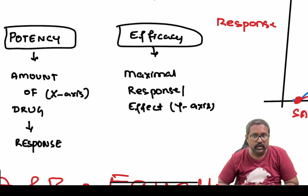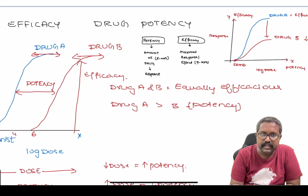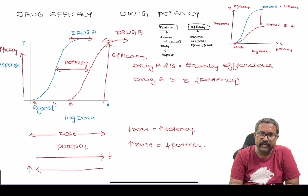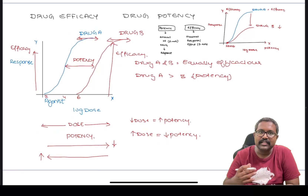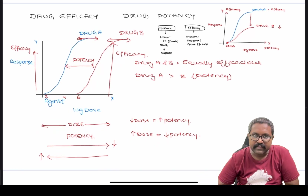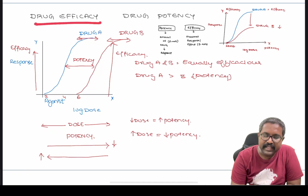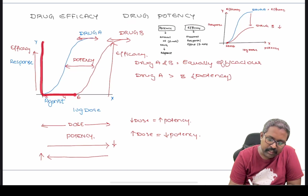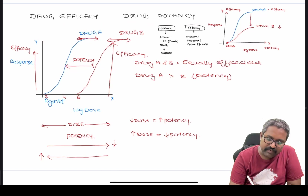That was the concept of drug potency and drug efficacy. Always remember this graph so you can easily interpret which drug is more efficacious and which is more potent when comparing drugs. Let me revise once again: drug efficacy and drug potency — when you draw a response versus log dose curve, the DRC curve, giving an agonist dose produces the response for drug A and drug B.